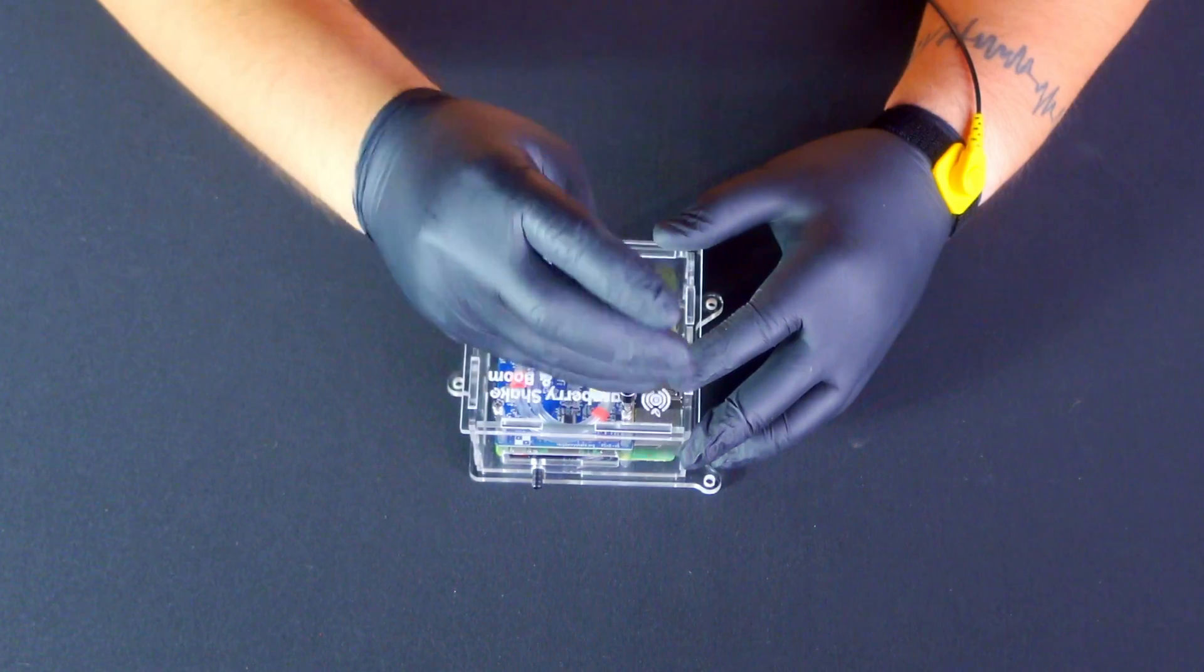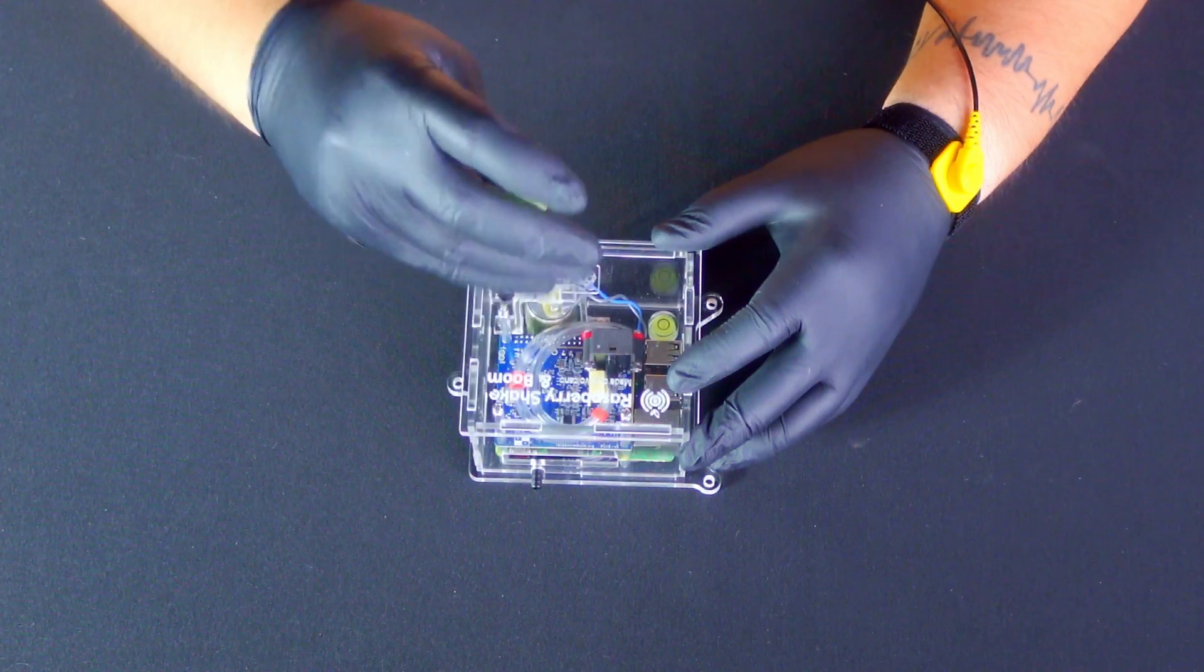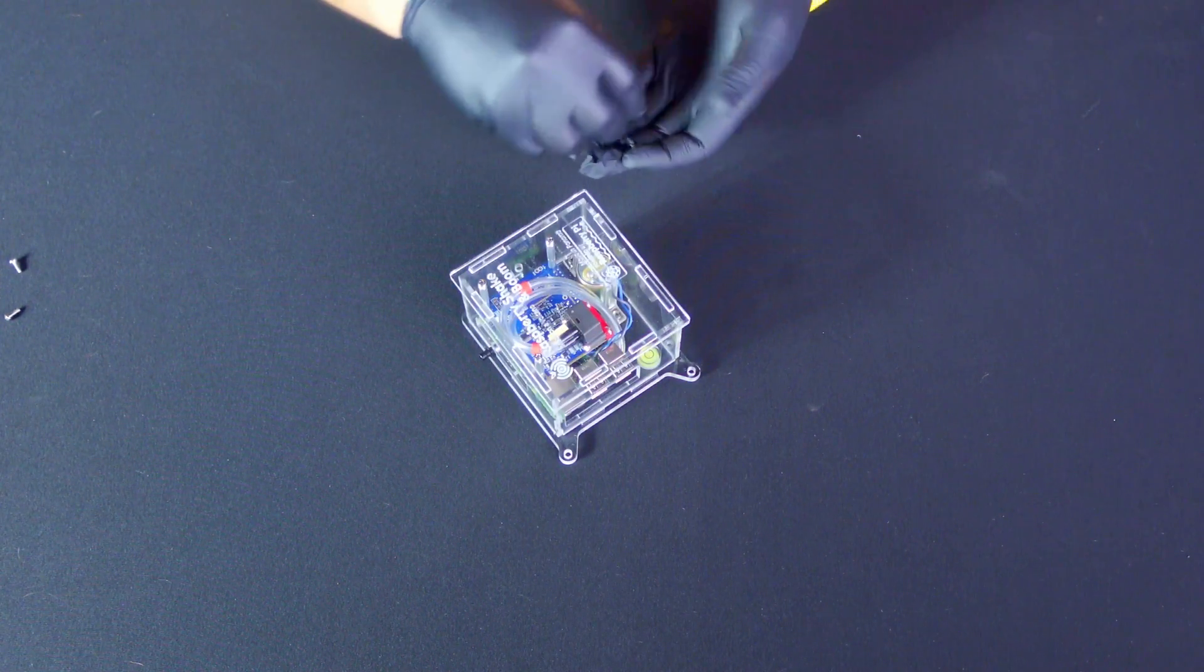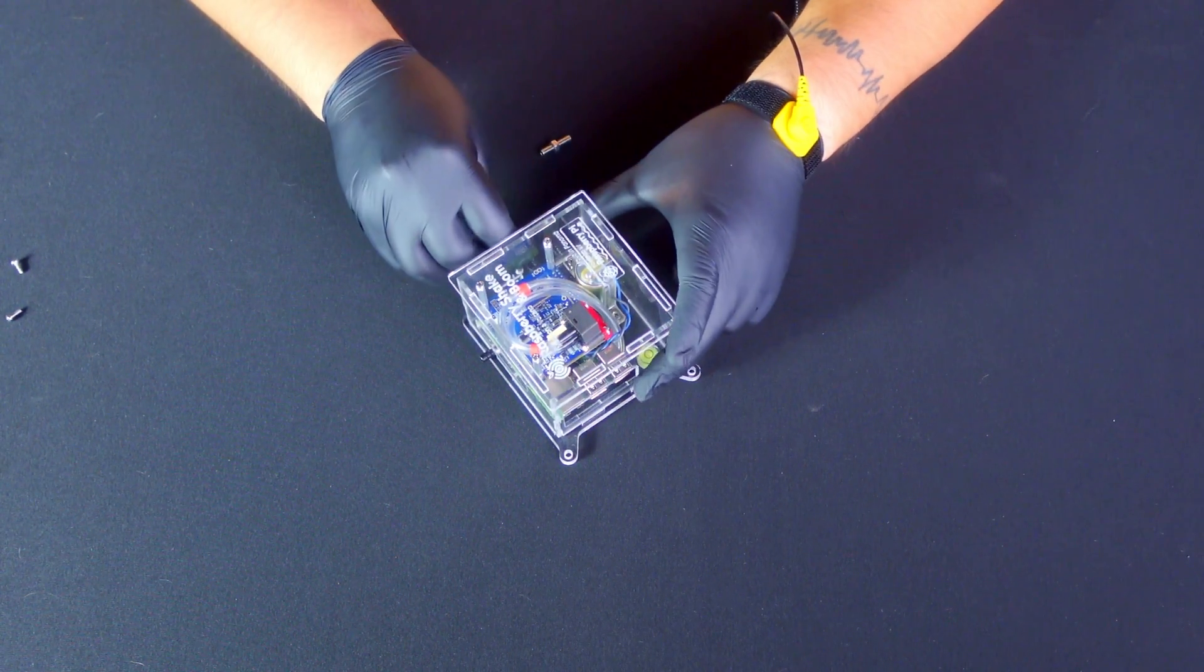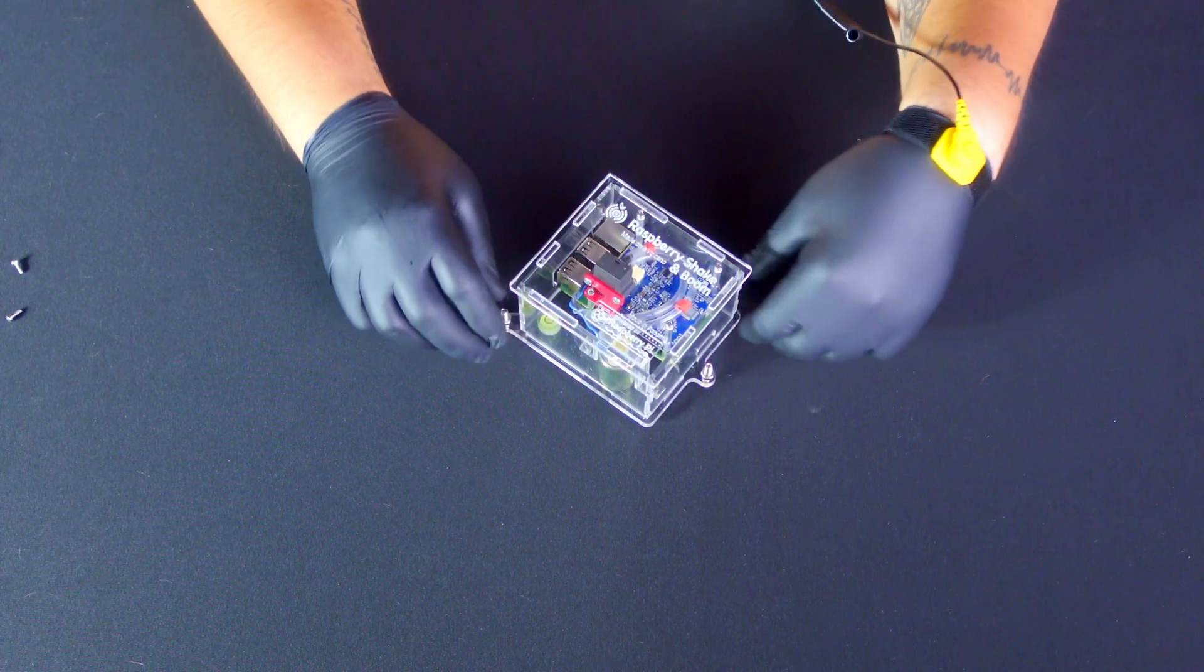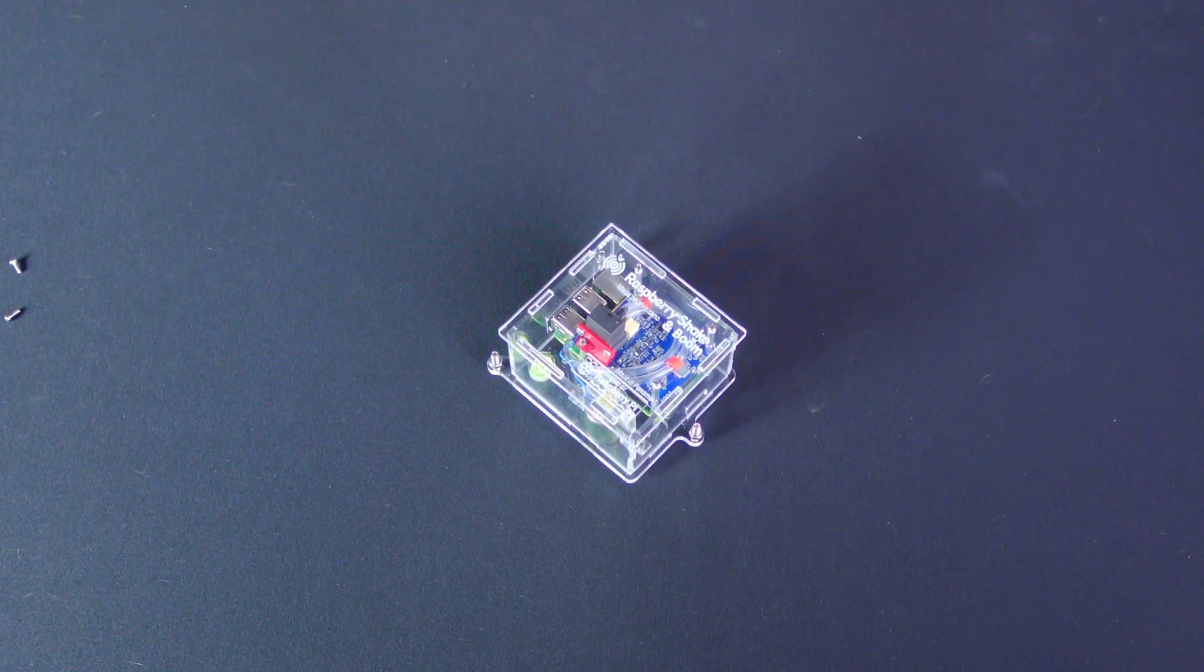Finally, use the large leveling screws to adjust your device, ensuring the bubble is centered on the bubble level. And congratulations, you've successfully assembled your DIY Raspberry Shake and Boom.